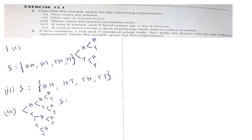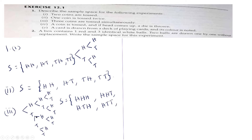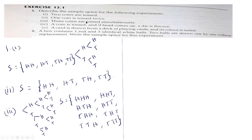So the sample space consists of: HHH, HHT, HTH, HTT, THH, THT, TTH, and TTT. This is the sample space when three coins are tossed simultaneously.